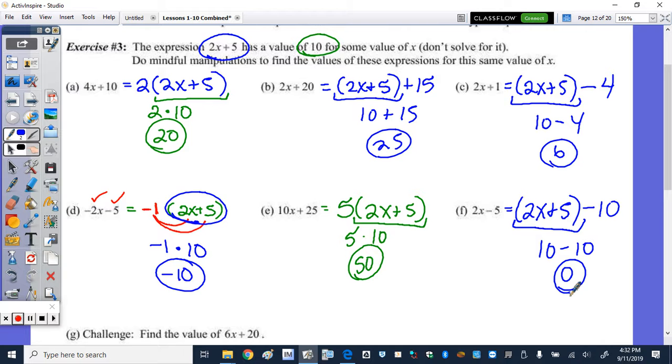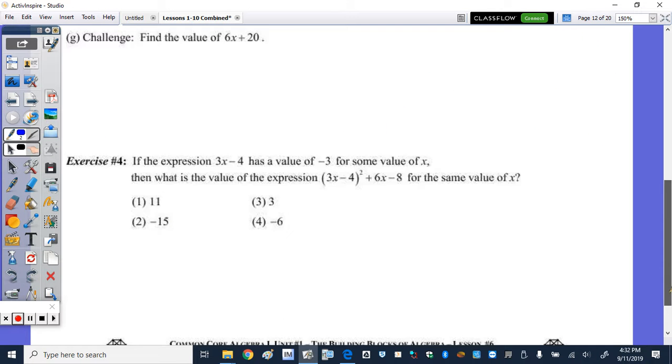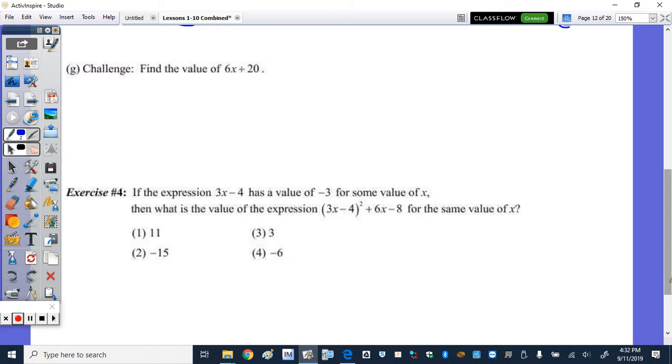So we're going to skip the challenge G, but we will try this multiple choice. It's also a bit more challenging, but let's give it a shot. It says, if the expression 3x minus 4 is equal to negative 3.